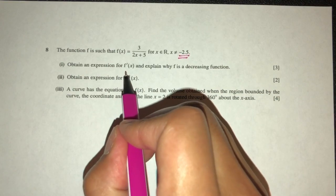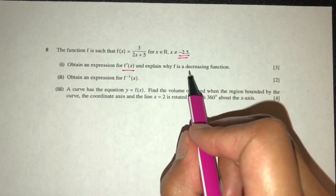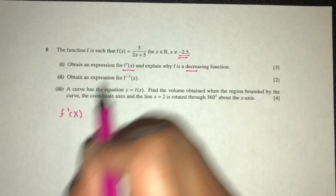Now part one, we have to find f prime of x and explain why it is decreasing. So pretty easy, f prime is simply differentiate that value.